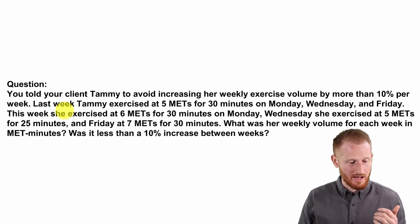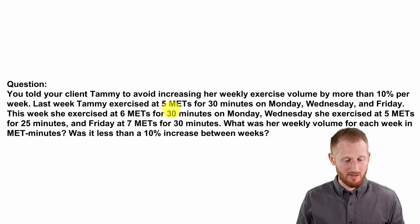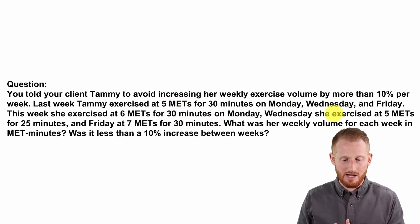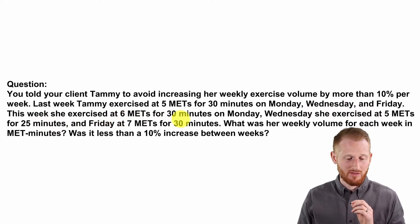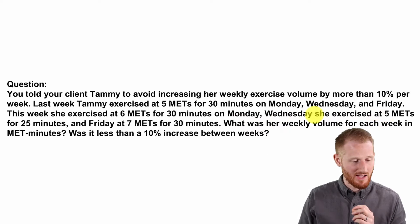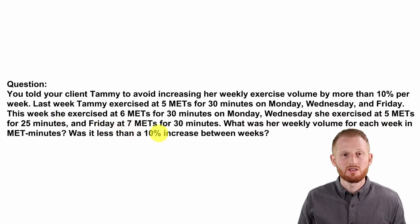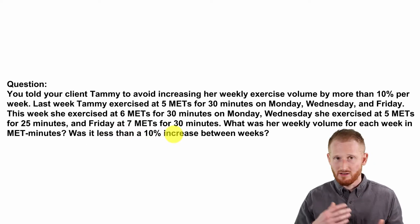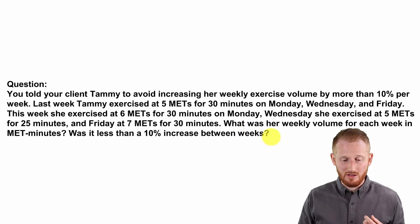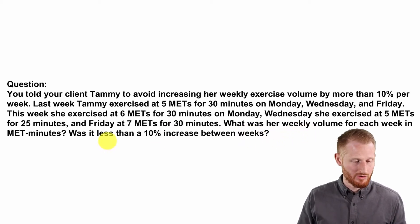Last week, Tammy exercised at five METs of intensity for 30 minutes on Monday, Wednesday, and Friday. This week she exercised at six METs for 30 minutes on Monday, five METs for 25 minutes on Wednesday, and seven METs for 30 minutes on Friday — she varied it up a little bit this week unlike last week.